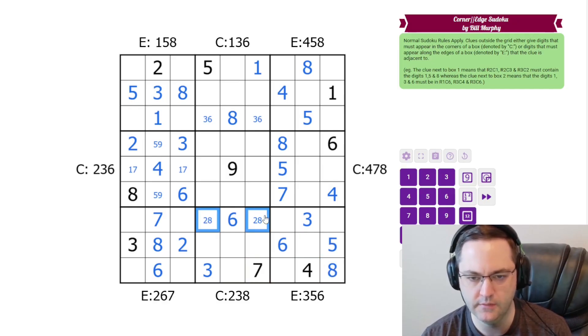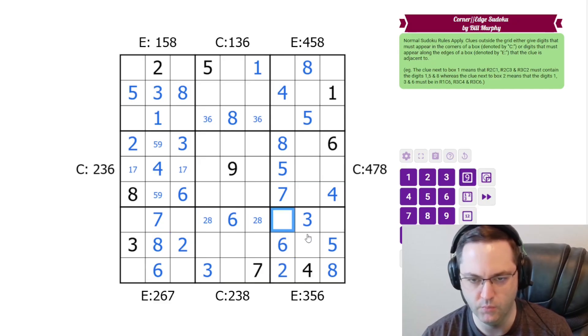And that means 2 now can only go in this cell, which means 1 in the column needs to go there. And then we have 7 and 9 left.